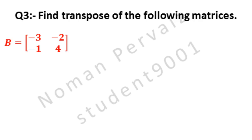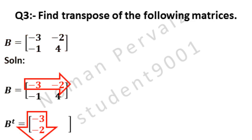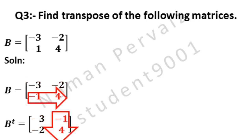Next, we have matrix B having 4 elements which are minus 3, minus 2, minus 1, and 4. B-transpose means transpose of B. The 1st row, which is minus 3 and minus 2, is converted to the 1st column. The 2nd row, which is minus 1 and 4, is converted to the 2nd column. Hence this is the transpose of matrix B.